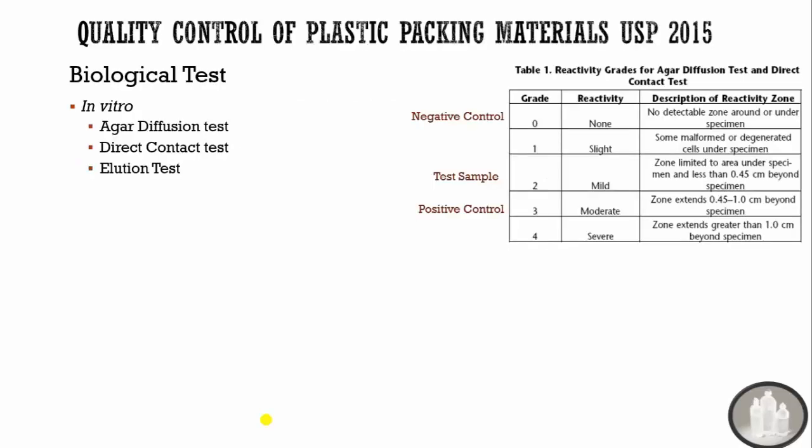Let's start with quality control of plastic packaging material according to USP 2015. First is the biological test. Biological tests for plastic packaging material are determined in two parts: in vitro test and in vivo test. In vitro test is further classified into three different classes: agar diffusion test, direct contact test, and elution test.